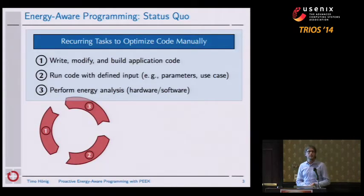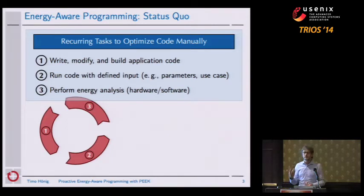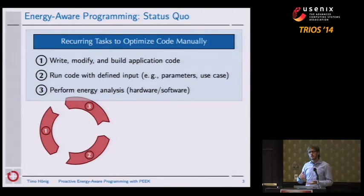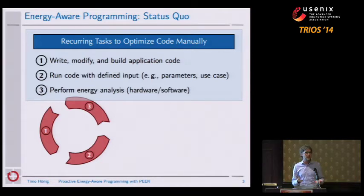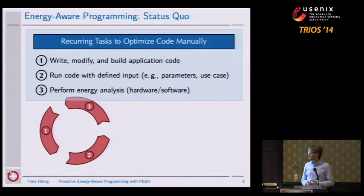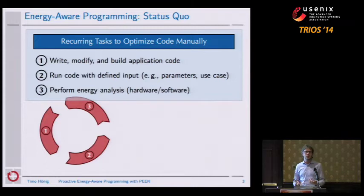When we look at how people are actually optimizing program code for energy efficiency today, they usually run through three tasks recurrently. First, they write or modify program code. They translate it to binary code and run it on a target hardware platform. For that, they use defined input data or a use case to compare to a different version. And during that run, they have to perform energy analysis of that application. For that, you either use hardware measurement devices or an energy profiler running in software. This is a very long task which is very difficult to accomplish because you are missing a tooling infrastructure which integrates the single steps into one workflow.